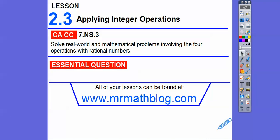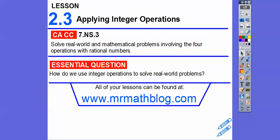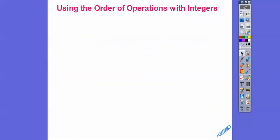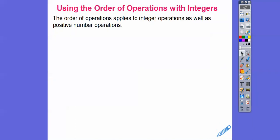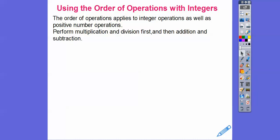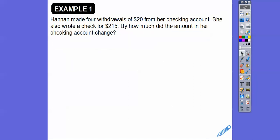Our essential question is: how do we use integer operations to solve real world problems? Using order of operations with integers — the order of operations applies to integer operations as well as positive number operations. Perform multiplication and division first, then addition and subtraction, always working from left to right.